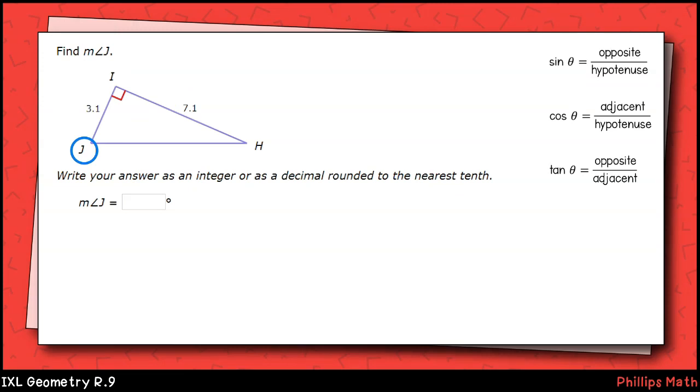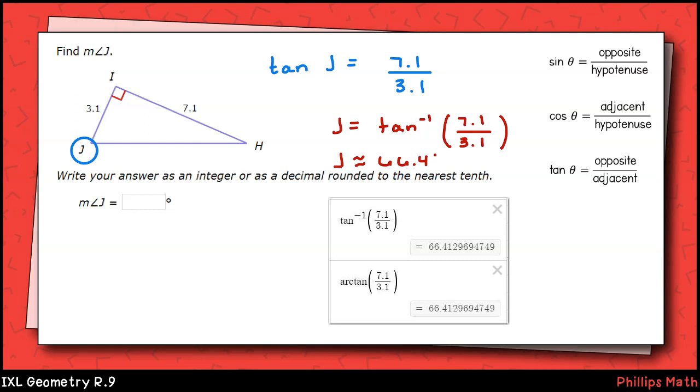Next, we're finding the measure of angle j. Once again, we're asked to approximate our answer to the nearest tenth. We are given the sides opposite and adjacent to that angle. We have tangent of angle j equals 7.1 over 3.1. To solve for the angle, we'll use the inverse tangent. That will be angle j equals the inverse tangent of 7.1 over 3.1, which is about 66.4 degrees. As with the inverse cosine, the inverse tangent is sometimes written as arctangent, or arctan for short. Trig is full of interesting notation.